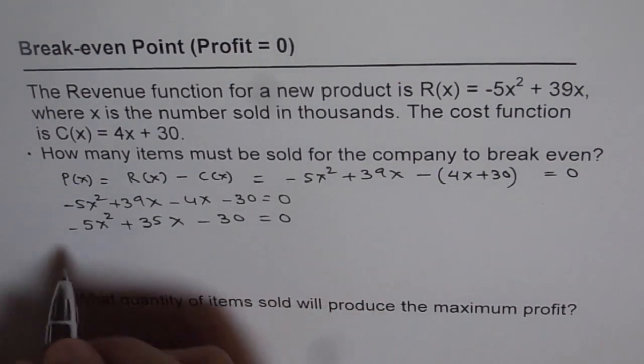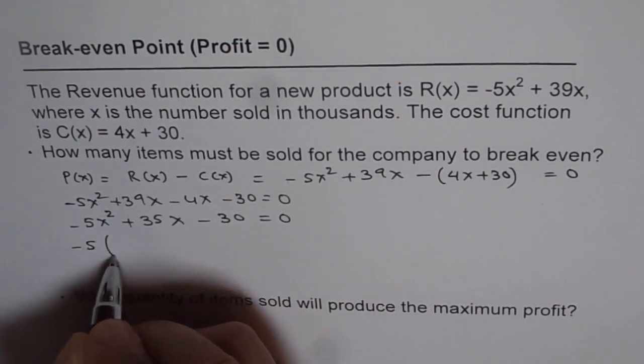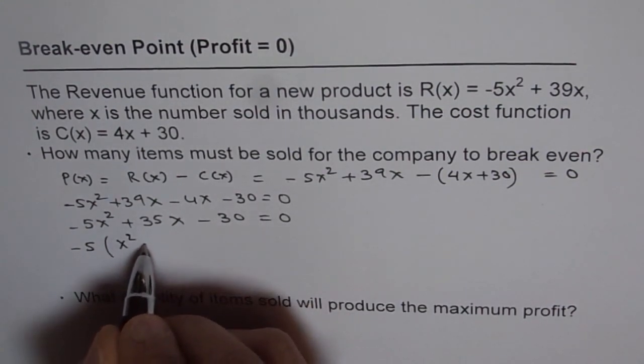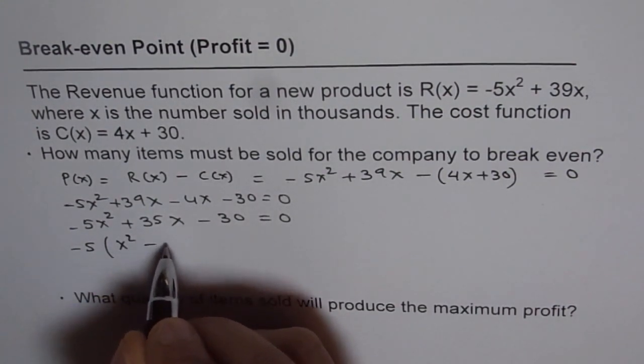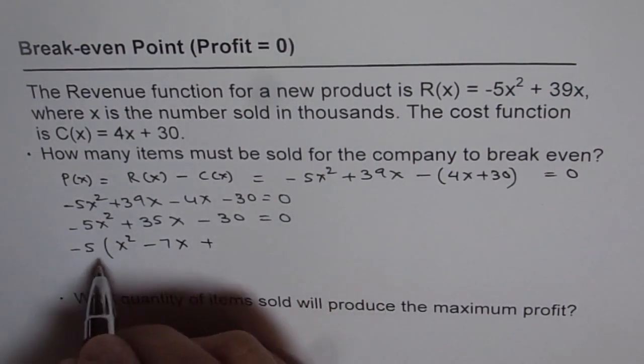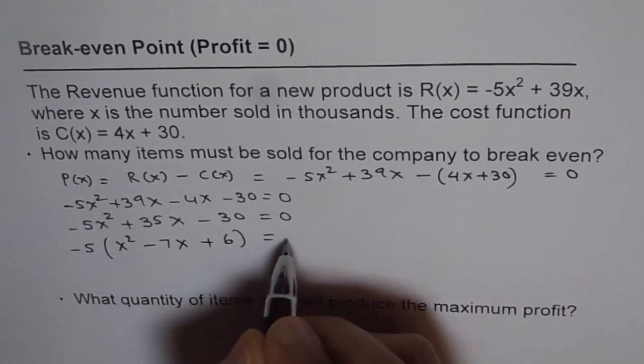Now we can take 5 common from here. So it's just minus 5 and we get x². When you take minus, then the signs will change. So this becomes minus 7x, and that will be plus 6 equals 0.